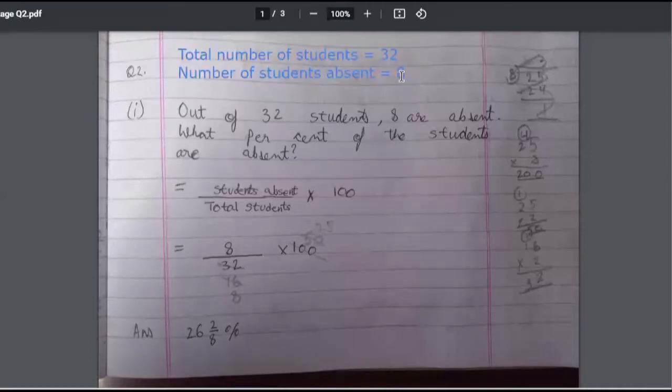What are you finding? The percentage of how many students are absent. So write that thing now: absent percent. Number of students absent upon total number of students into 100. Make sure you write this thing.